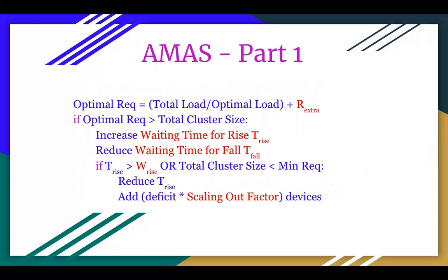This is the code snippet for scaling out. As a primary step, we introduce the adaptive parameter R-extra into our metric of optimal requirement, conveying that the threshold of optimality shall change with the changing nature of the environment. We then use this adaptive threshold to check how far the current cluster size is from the optimal limit. Here we update the parameters of time elapsed, and when the elapsed duration crosses the threshold, we perform the scaling out operation. While scaling out, we use the scaling out factor to decide how many devices shall be scaled out in this iteration. If the current cluster size is even lower than the minimum requirement, the algorithm shall not wait for the temporal threshold — it will address the change immediately. This ensures that the waiting nature won't hinder performance at the time of urgency.